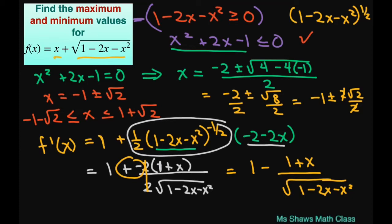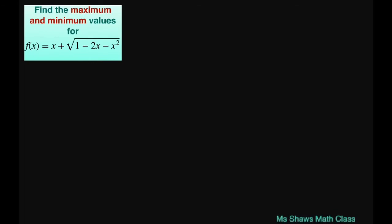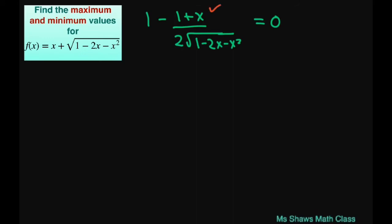From there, to find horizontal tangents we set f prime of x equal to 0. So we have 1 minus (1 plus x) divided by 2 times the square root of 1 minus 2x minus x squared equals 0. Moving the fraction to the other side gives us 1 plus x divided by 2 times the square root of 1 minus 2x minus x squared equals 1.